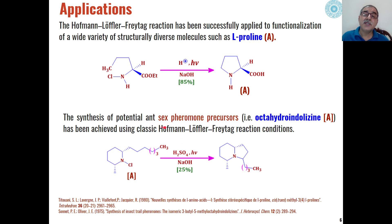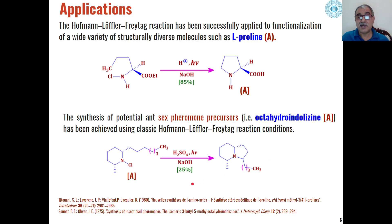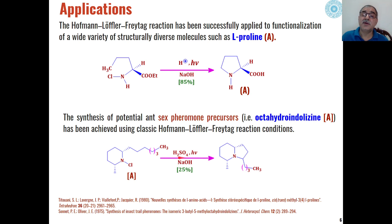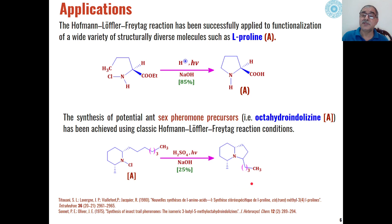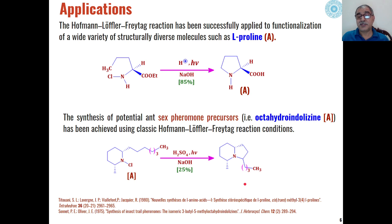Potential N-sex pheromone precursors like octahydroindolizine can be synthesized from the HLF reaction. When N-chloro-cyclohexyl amines are reacted with sulfuric acid under photochemical conditions in the presence of sodium hydroxide, 25% of the product contains octahydroindolizine derivatives, which are potential N-sex pheromone precursors.